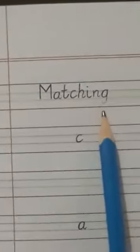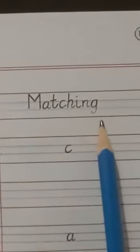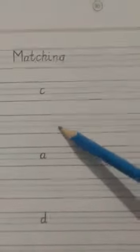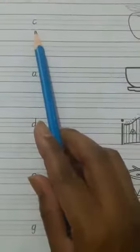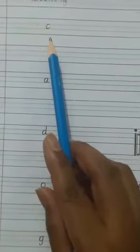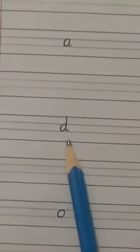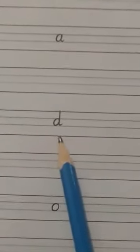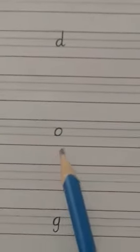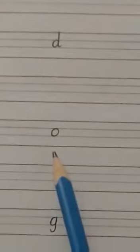What word is this? Matching. So first of all, we will read the sounds of this line. So what is our first sound? C. Next sound? A. D. O. And the last sound is G.